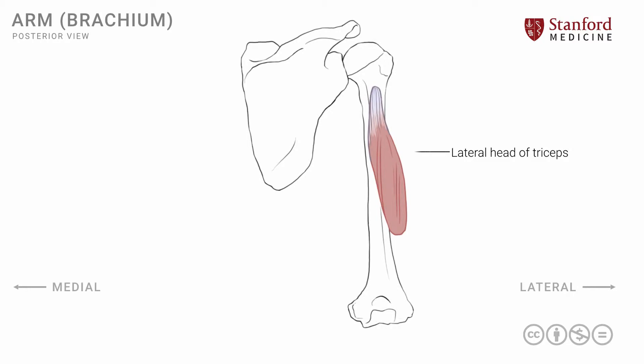The second head of the triceps is known as the medial head of the triceps, and it is situated, as the name suggests, on the medial side of the posterior humerus, and is seen here.